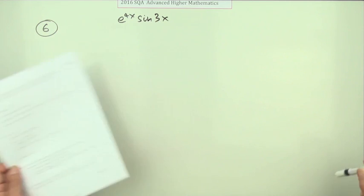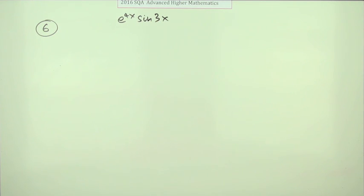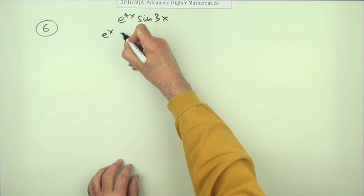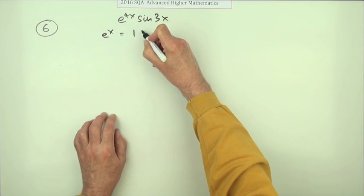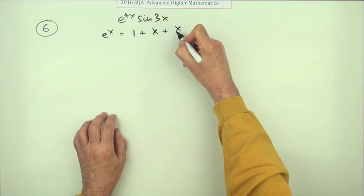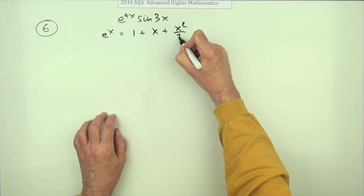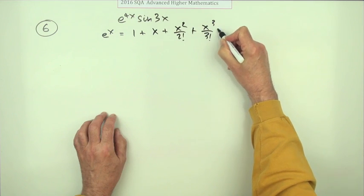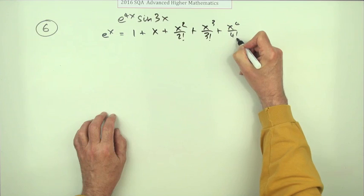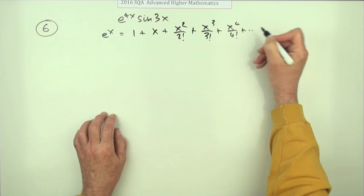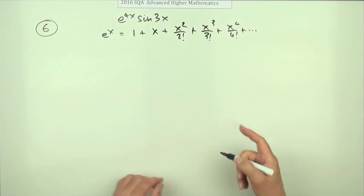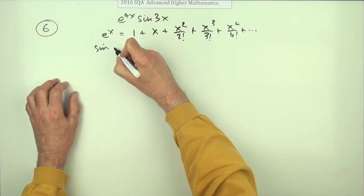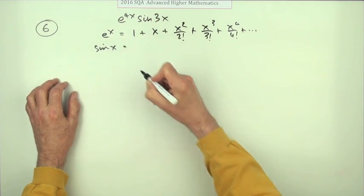For e and sine, I'll just state them again here. e to the x is just 1 plus x plus x squared over 2 factorial plus x cubed over 3 factorial plus x to the 4 over 4 factorial - such a simple one to remember. From that are derived sine and cosine.